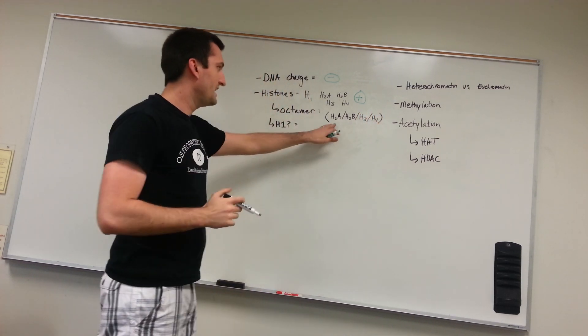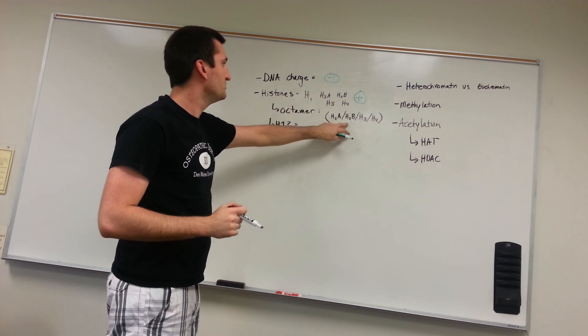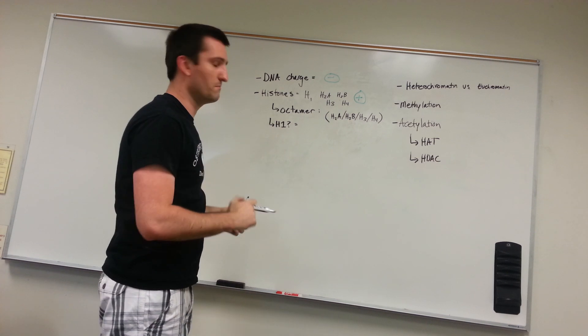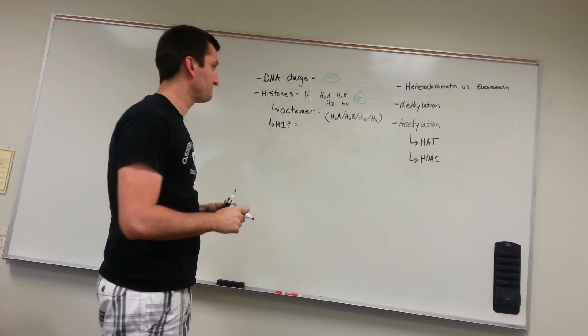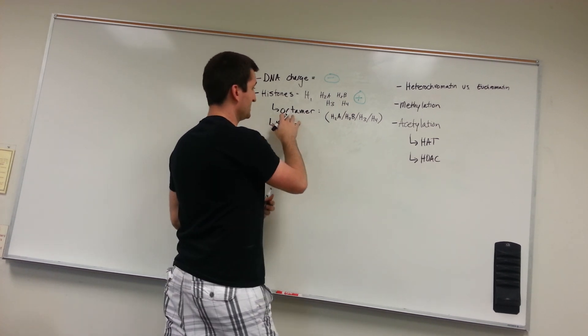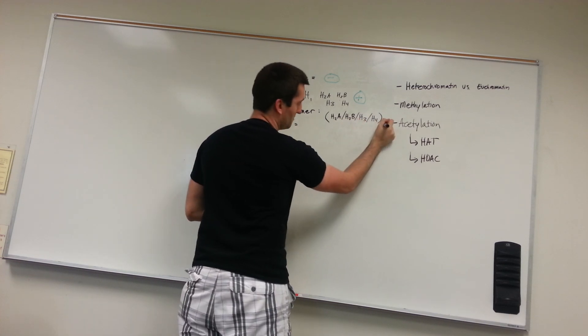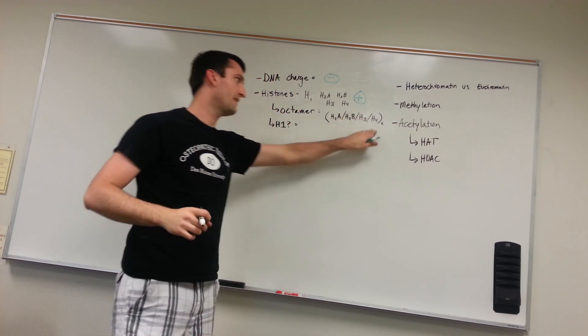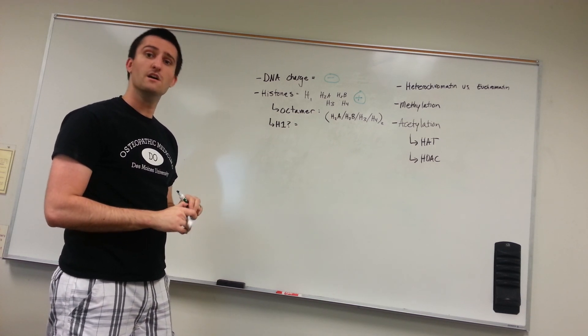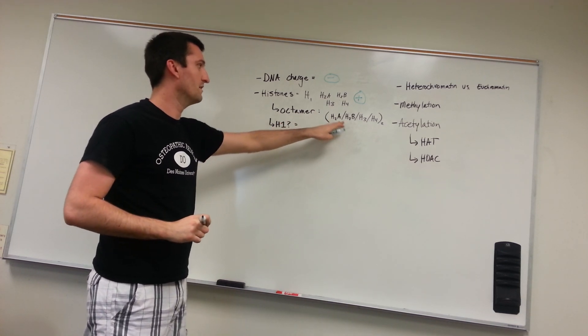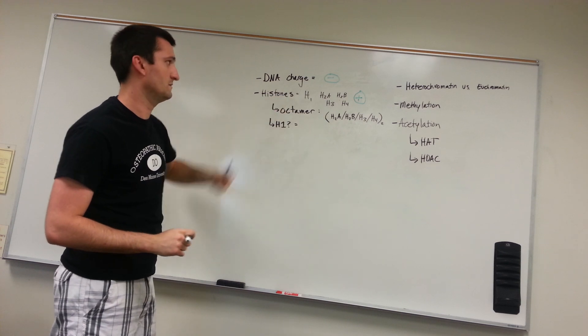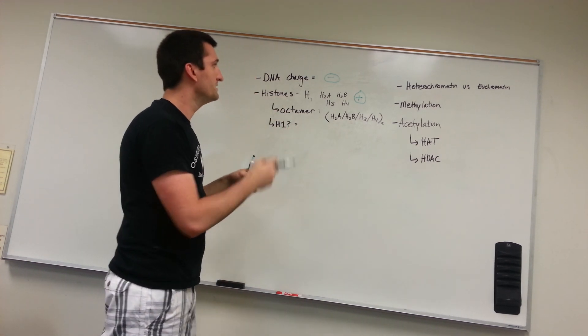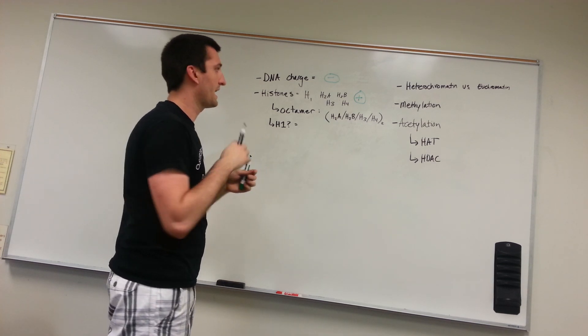We've got an H2A, an H2B, an H3, and an H4 component to this nucleosome. It's an octamer, so we're just going to double that. You've got two H2As, two H2Bs, two H3s, and then finally two H4s. So you've got two of each type of subunit for the histones. Eight of those are going to come together. DNA is going to wrap around it and condense.